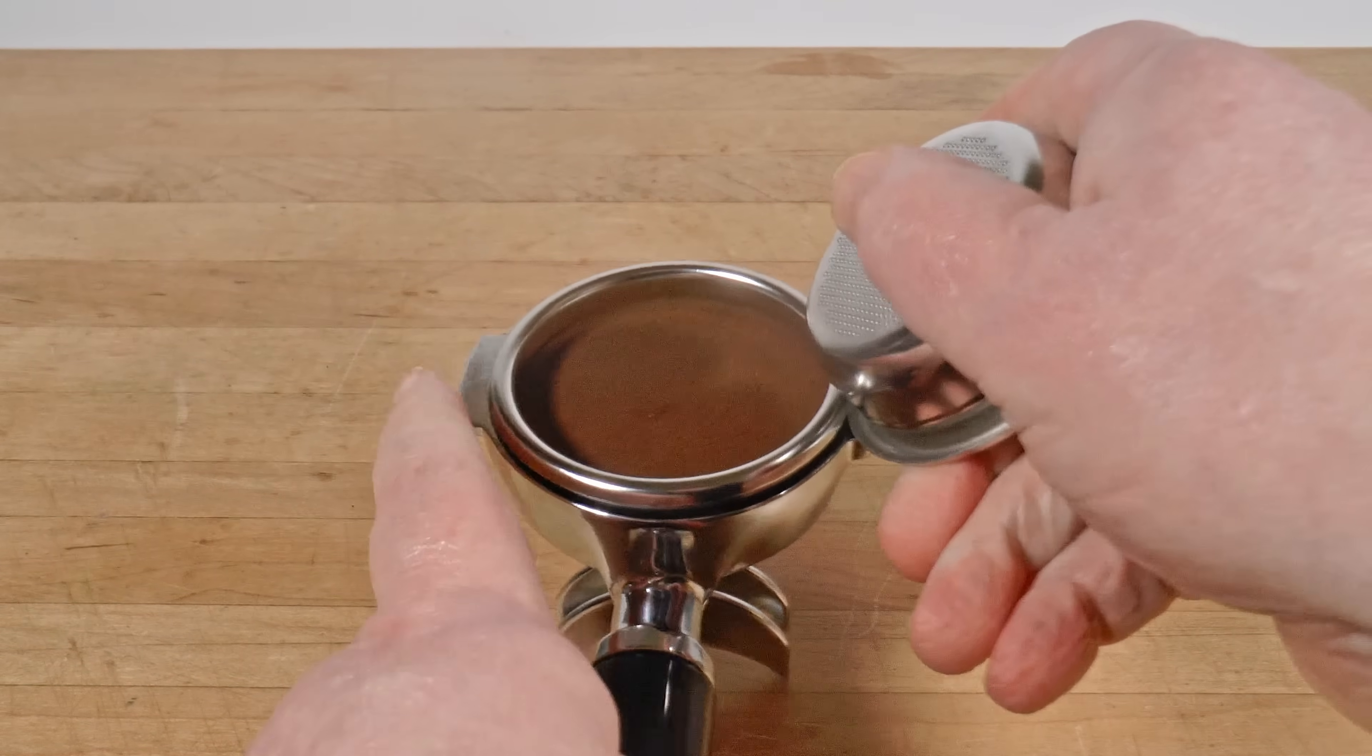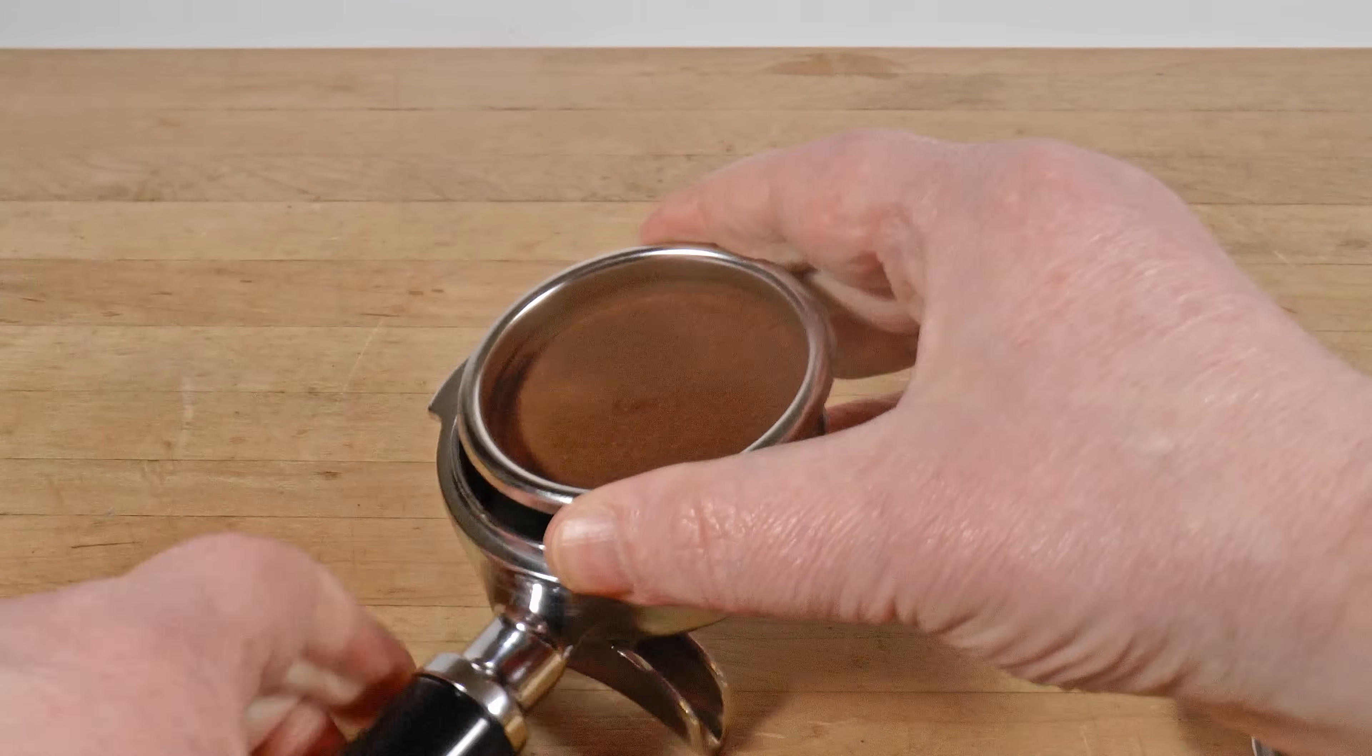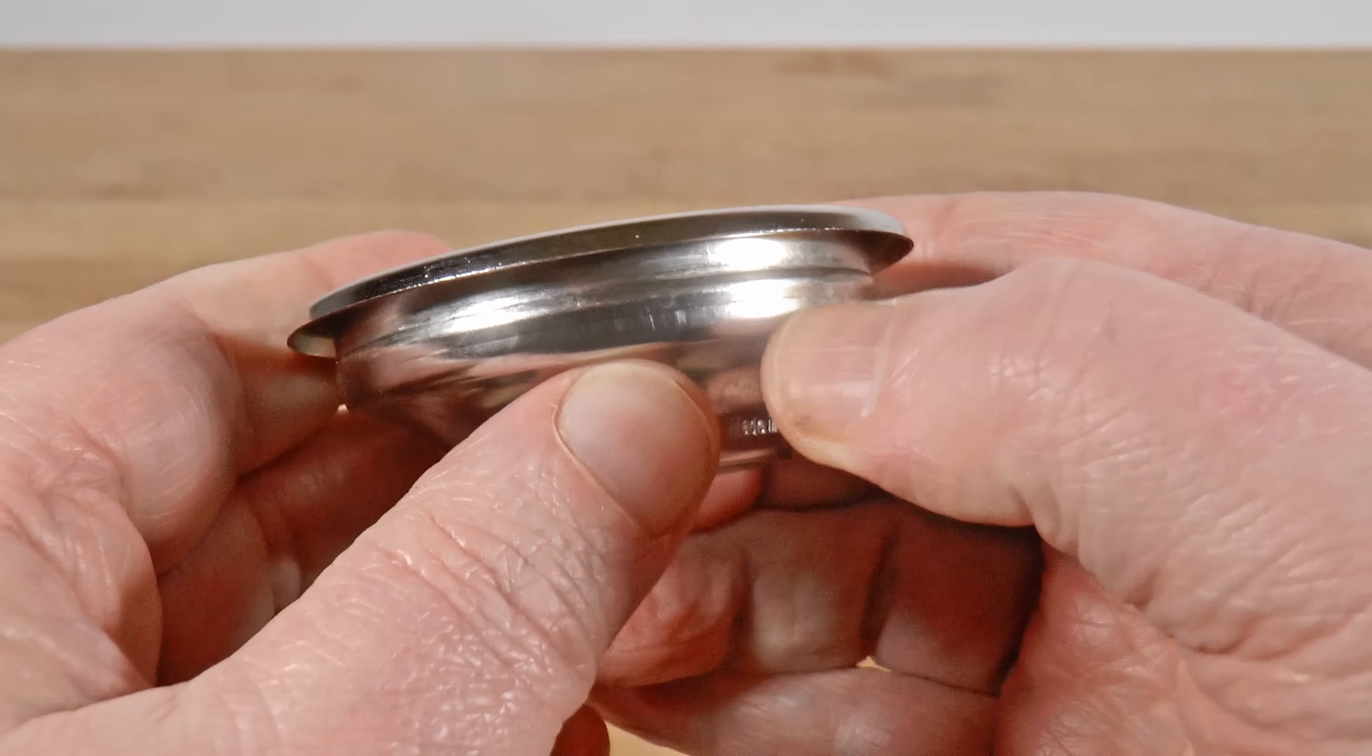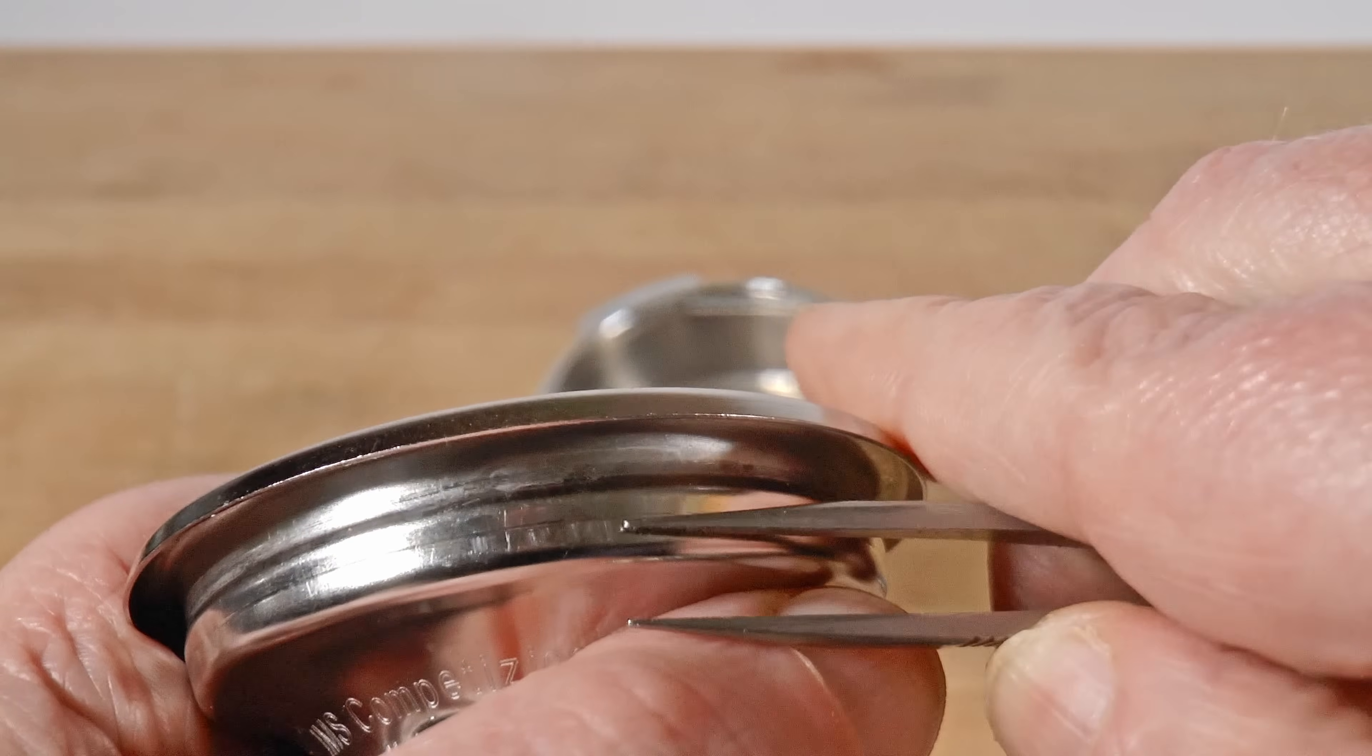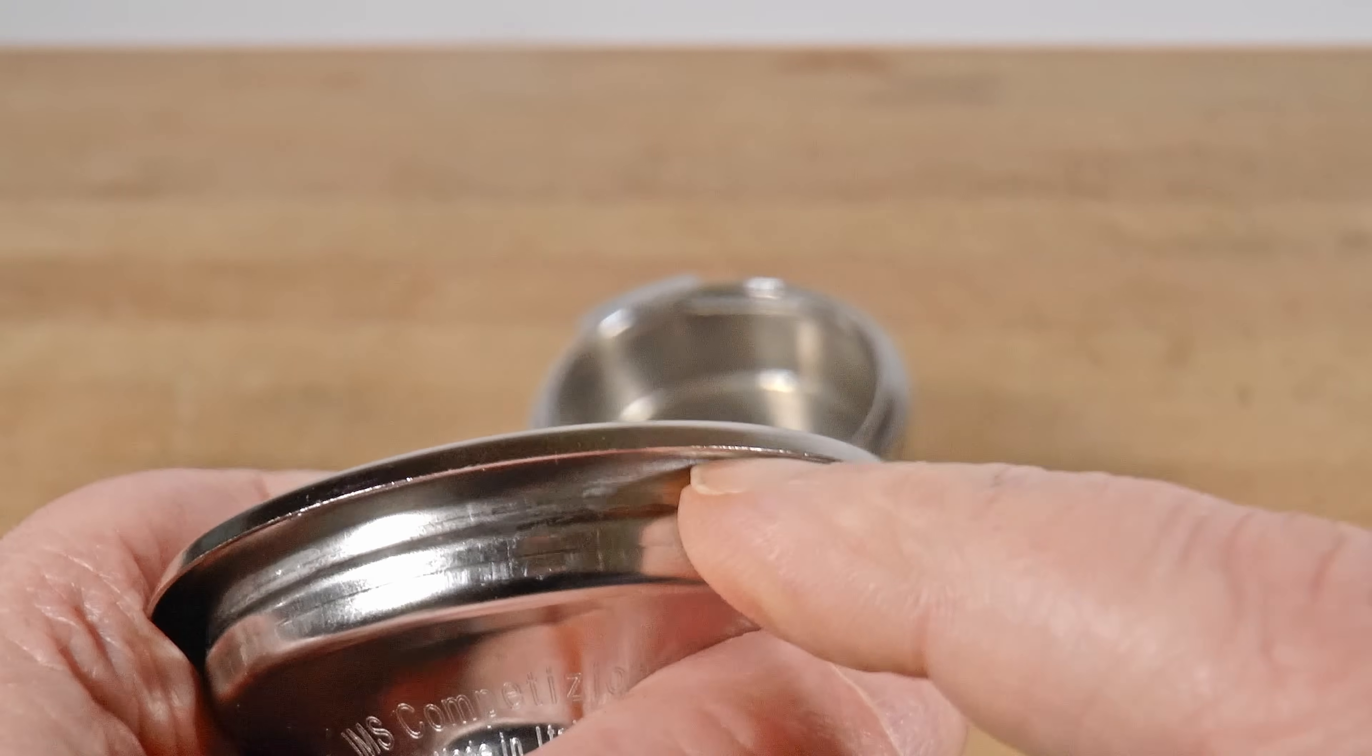But these little fellas are tricky to use. Here's your fill range. The straight side wall, just below the ridge. If you have too little coffee, you can't tamp it properly. If you have too much, you'll get a messy, cracked puck. So establish the right dose of coffee first.